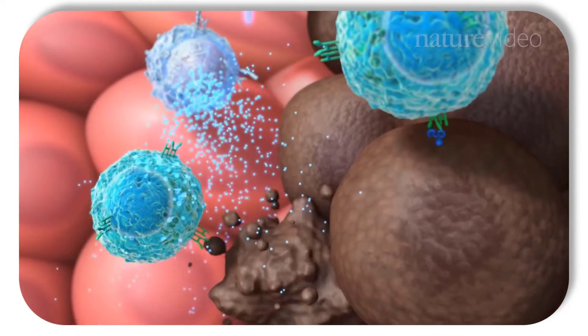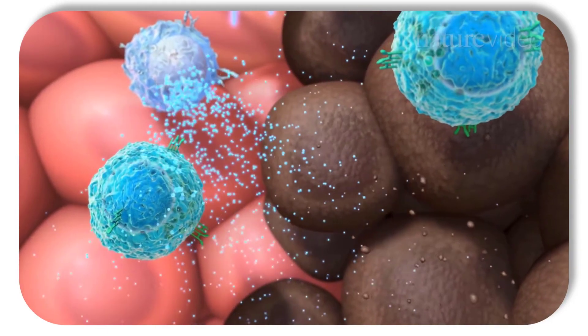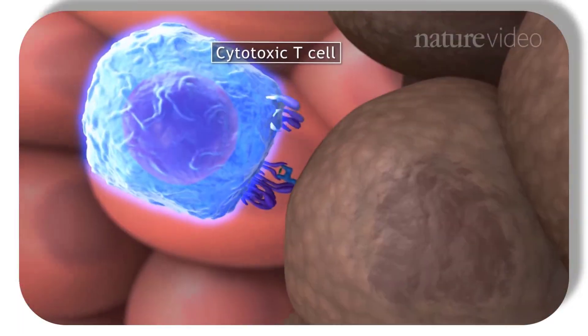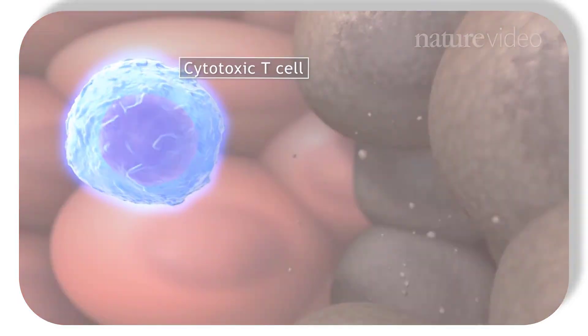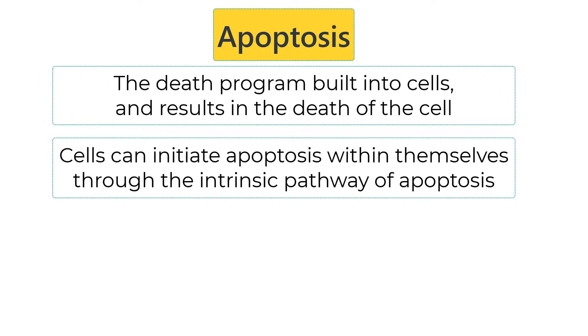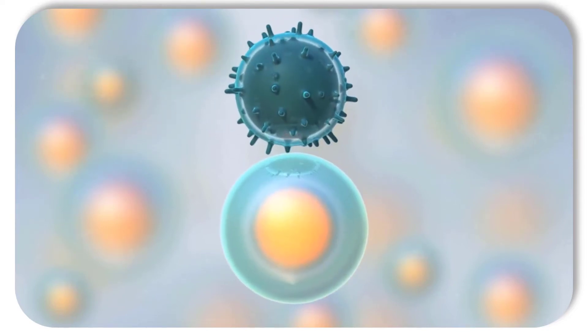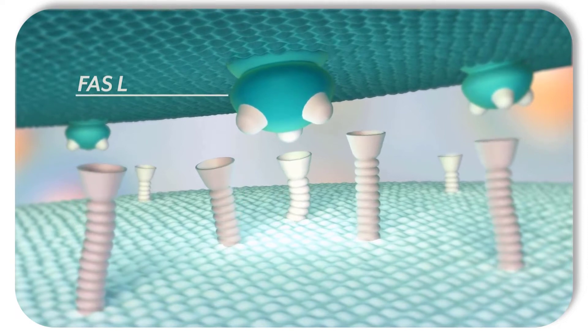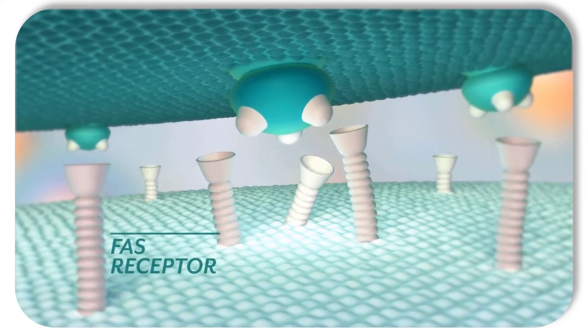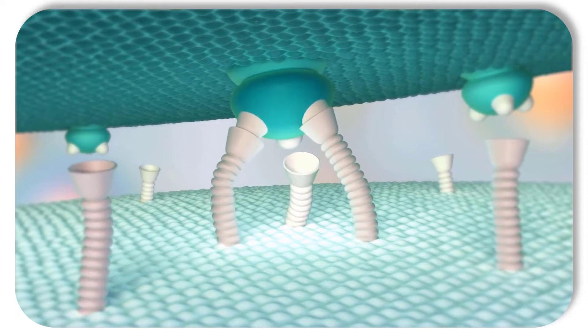When a CD8 T-cell binds its receptor to the tumor antigen on MHC1 on cancer cells, it signals the T-cell to kill the cancer cell. The T-cell can also kill cancer cells by directly inducing apoptosis — the death program built into cells that results in the death of the cell. A cell can initiate apoptosis within itself through the intrinsic pathway, but apoptosis can also be initiated by another cell binding the FAS receptor on the outside of the first cell. This is the extrinsic pathway of apoptosis. T-cells present the FAS ligand, which can bind the FAS receptor on cancer cells, inducing apoptosis and killing the cancer cells.